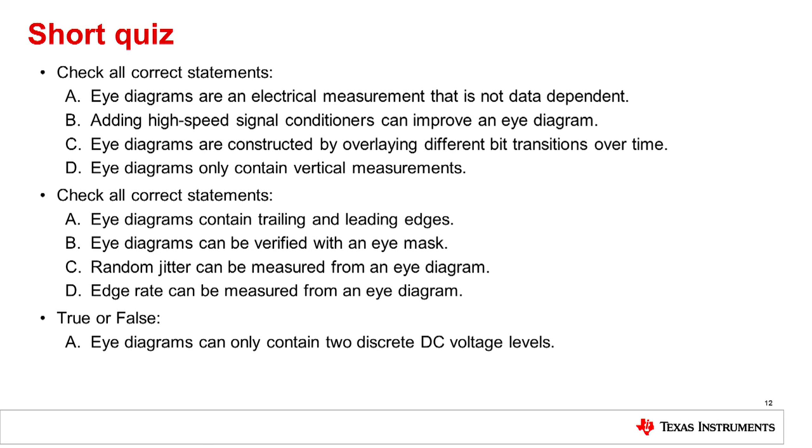Check all correct statements. A. Eye diagrams contain trailing and leading edges. B. Eye diagrams can be verified with an eye mask. C. Random jitter can be measured from an eye diagram. D. Edge rate can be measured from an eye diagram. The correct answer is B, C, and D.